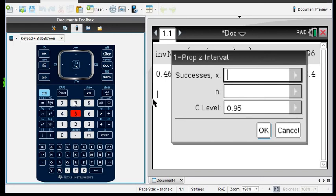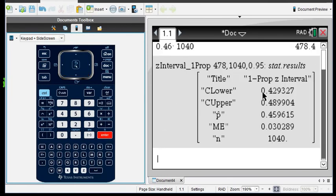What we're going to do is we're going to plug in our x, which was our number of successes, which was 478. n was our sample size of 1,040. And c is our confidence level, which we were told was 0.95 or 95%. And so our c lower is 0.4293 and our c upper is 0.4899.